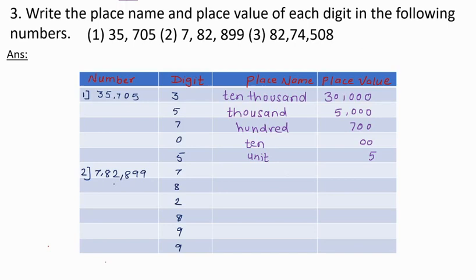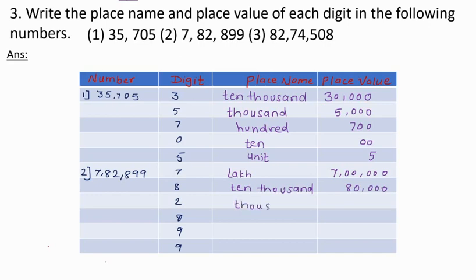Next number is 7,08,28,99. 7's place name is lakh and place value is 7 lakh. The digit 8: place name is 10,000 and place value is 80,000. Next digit 8: place name is 1000 and place value is 2000. Next digit 8: place name is 100 and place value is 800.